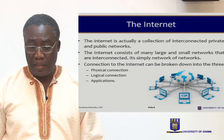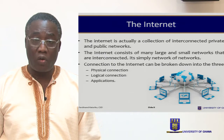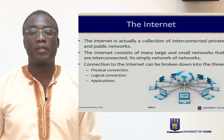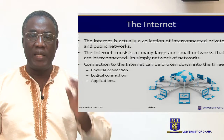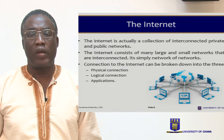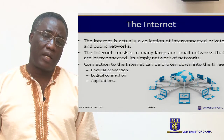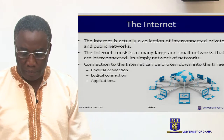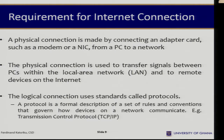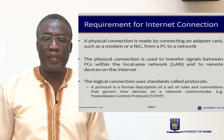An example of a larger and more interesting network is the internet, which is actually a collection of interconnected private and public networks. The internet consists of many large and small networks that are interconnected — simply speaking, it is a network of networks. Connection to the internet can be broken down into three parts: physical connection, logical connection, and applications connection. A physical connection is made by connecting an adapter card, such as a modem or a network interface card (NIC), from a PC to a network.